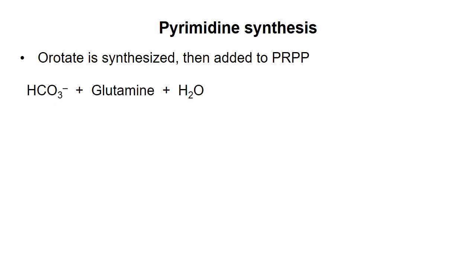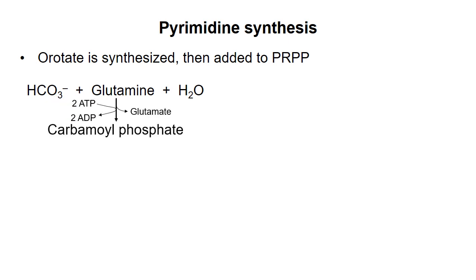The first reaction is joining of bicarbonate to an amine group from glutamine to produce carbamoyl phosphate. The carbon and nitrogen of this molecule will end up as part of the six-membered pyrimidine ring.